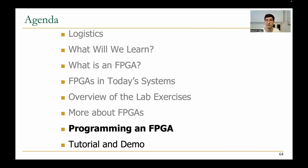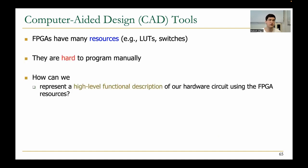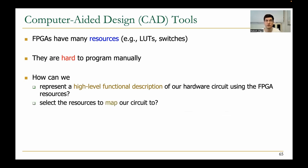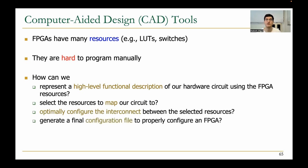So we've talked about FPGAs being programmable, but how do we program them? We use computer-aided design tools. For the most part, we don't program them ourselves because FPGAs have many resources and it's really difficult to manage all those mappings manually. The questions we must answer include: how can we represent a high-level function description using FPGA resources? How do we select the resources to map our circuit to? How do we optimally configure the interconnect between selected resources? And how do we generate a final configuration file that the FPGA can understand?